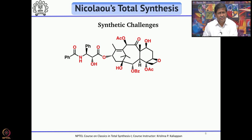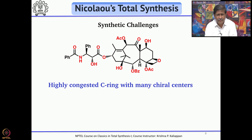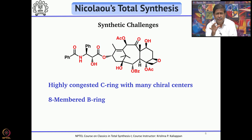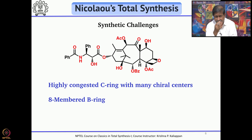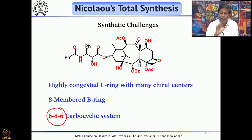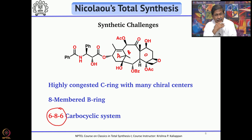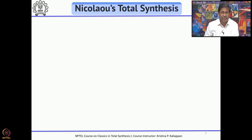Taxol is a very complex molecule with many challenges. First, there are many chiral centers, all congested — particularly in the C ring and B ring. Second, the construction of the 8-membered ring is not easy and created quite a bit of problem for many synthetic chemists. Third, the tricyclic core is a 6-8-6 system: A and B rings are a bridged system, while B and C are fused, creating different types of synthetic problems.